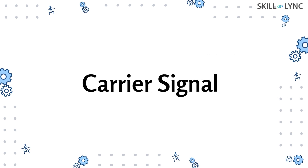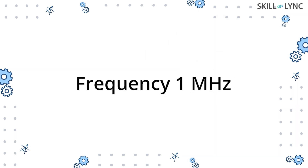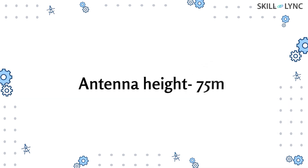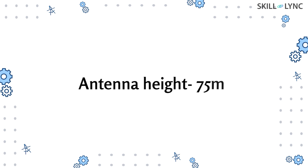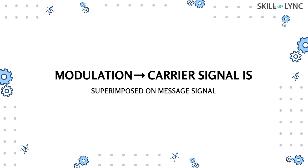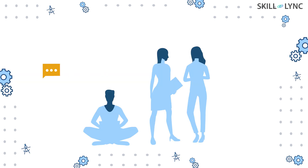This is where the carrier signal comes into play. The carrier signal has a frequency much higher than the message signal. If we transmit a signal having a higher frequency of 1 megahertz, the antenna height is reduced to 75 meters, which is attainable. By the process of modulation, the carrier signal is superimposed on the message signal, keeping the size of the antenna achievable.